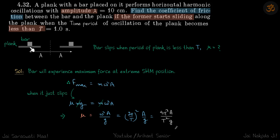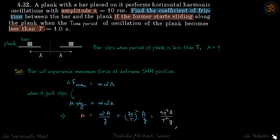At that moment the frictional force will reach its maximum, that is μmg. This gives the equation μmg = mω²A, or μ = ω²A/g. Now they have not given ω but they have given T, so we'll write ω in terms of T and this will be our answer.